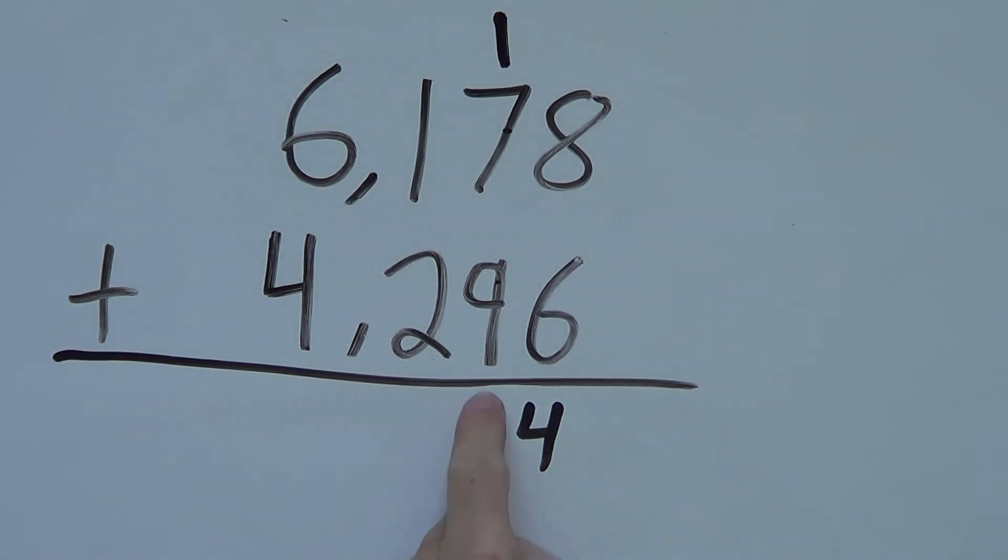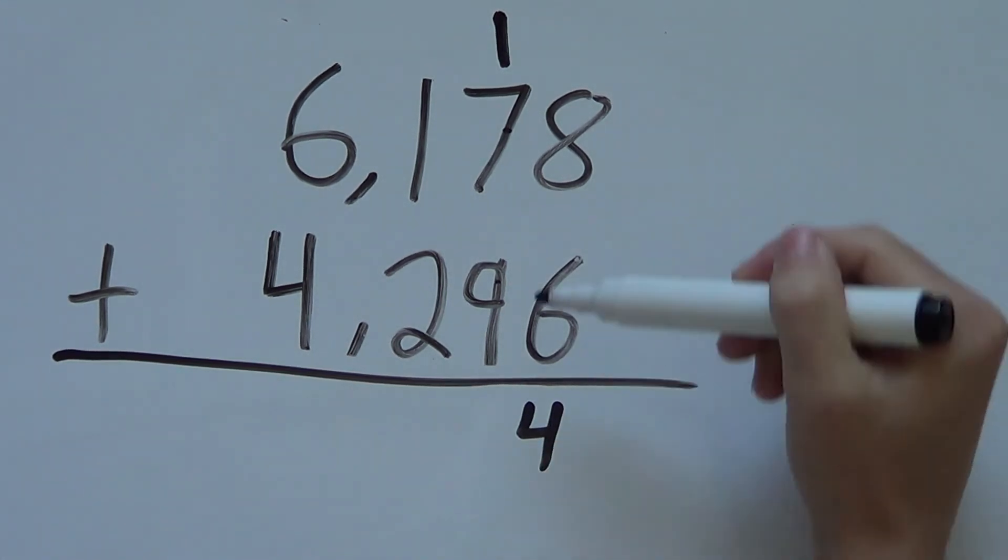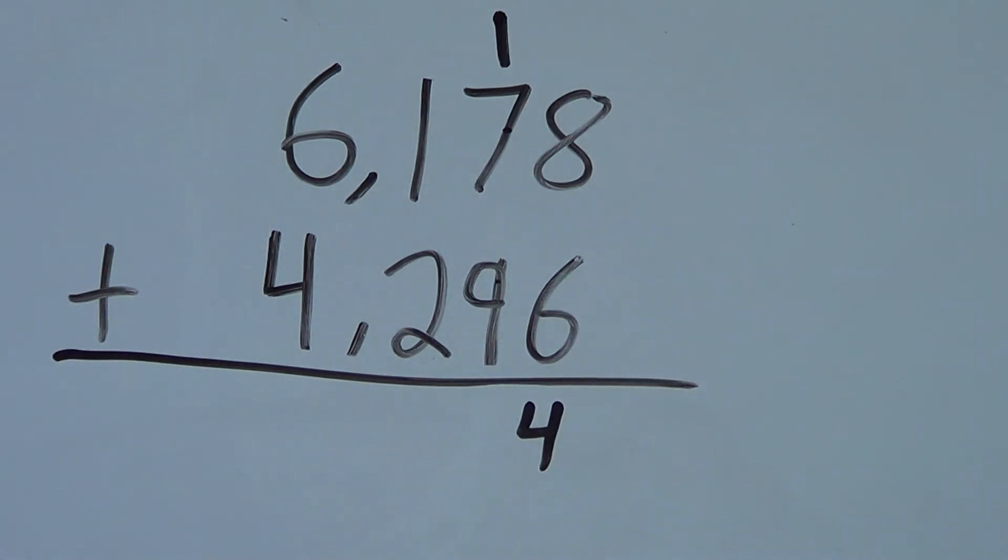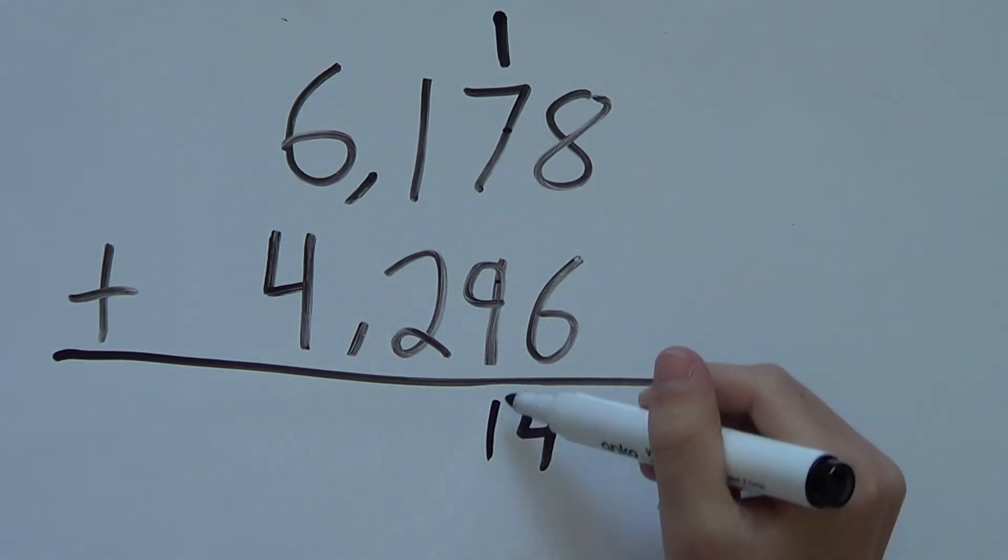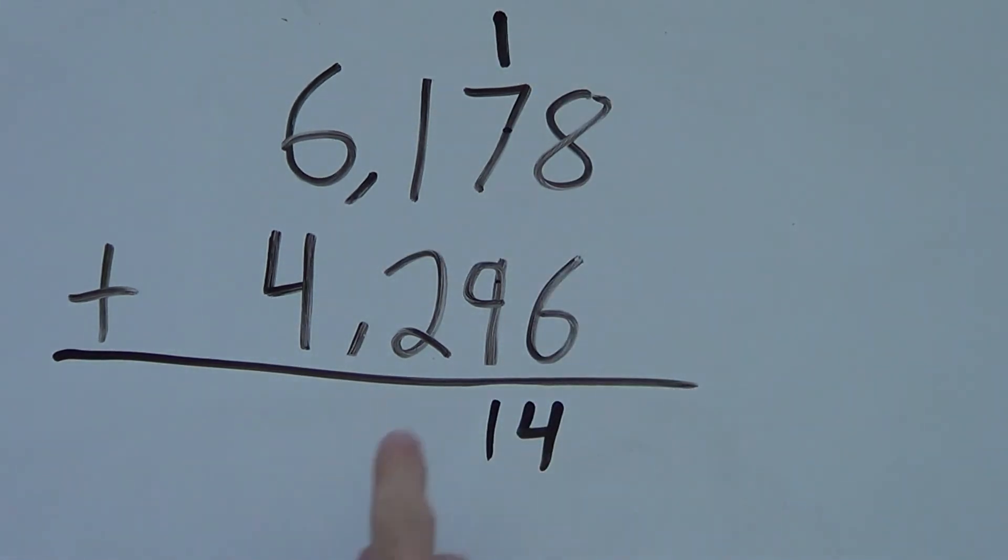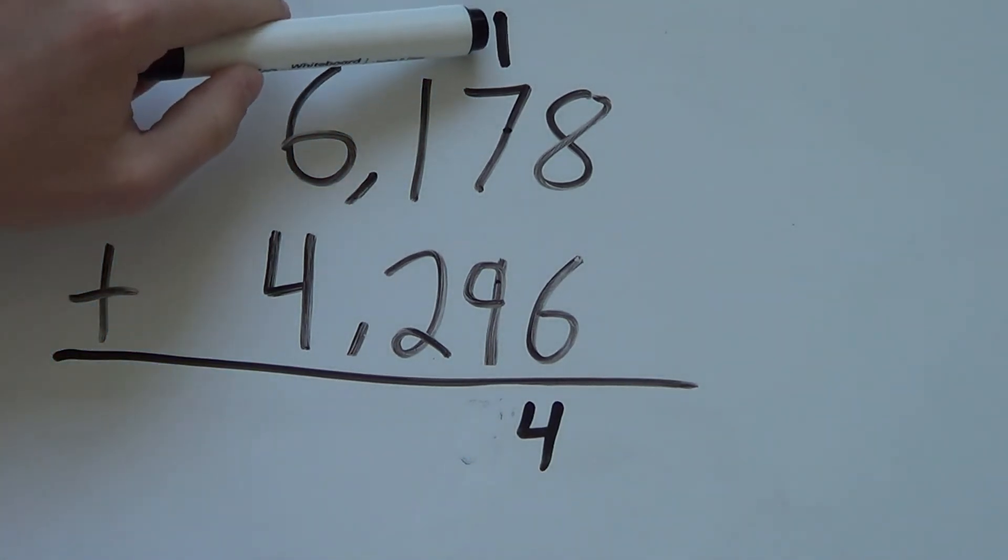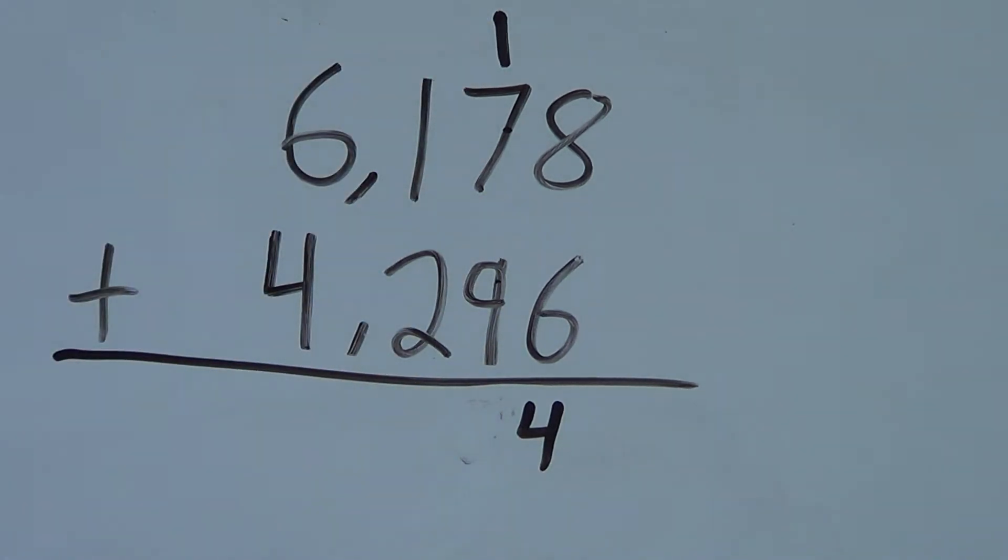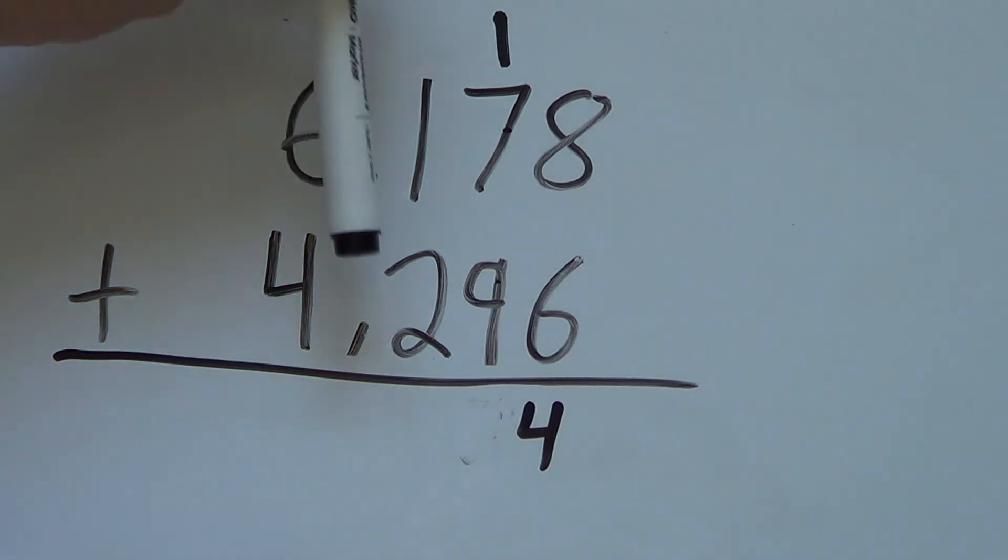This is called carrying. We carry the 1 up to the top. Or the first number. We add 14. We carry the first number up and leave the second number at the bottom here. It's still 14. But the 1 is up here. So that's called carrying. It's very important. We'll see it again in this row.